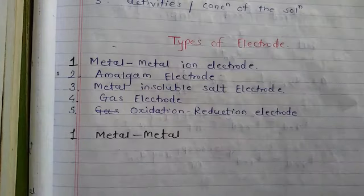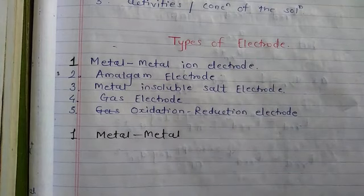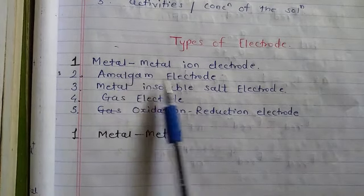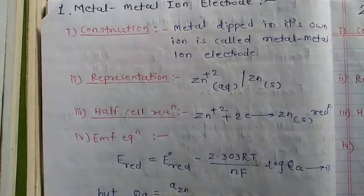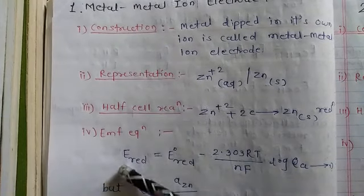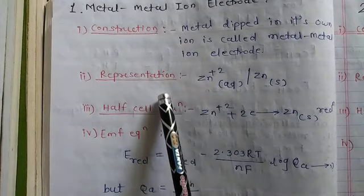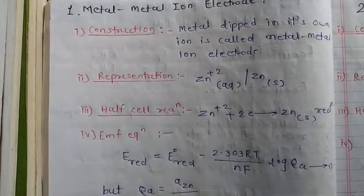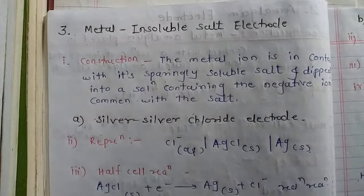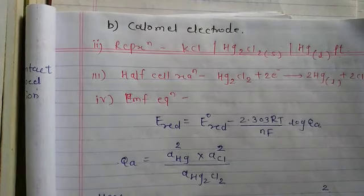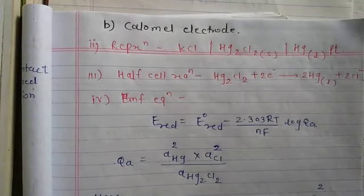In today's session, we discussed the types of electrodes. There are five types, and we covered three: the metal-metal ion electrode, the amalgam electrode, and the metal insoluble salt electrode — which includes the silver-silver chloride electrode and the calomel electrode. The remaining types will be discussed in the next part. Thank you.